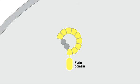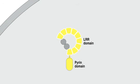NALP3 has a pyrin domain at its amino-terminus and a domain of leucine-rich repeats, also known as the LRR domain.